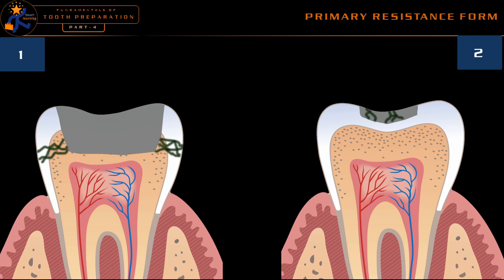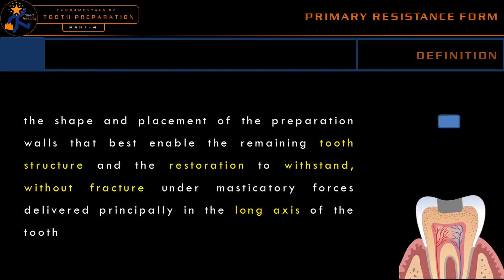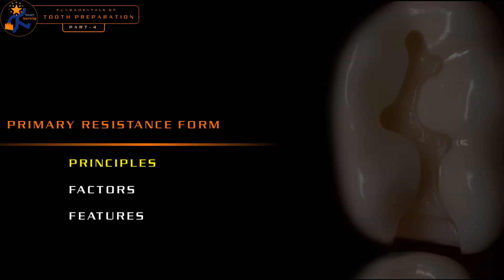In the second situation, the restoration is very thin and so it is very weak — the tooth was strong but the restoration started fracturing off, ending up with a restorative failure. So what primary resistance form actually means is: we should maintain the strength of the tooth, and at the same time provide enough bulk for the restorative material so that neither the restoration nor the tooth will fracture. Primary resistance form is defined as the shape and placement of preparation walls that best enable the remaining tooth structure and the restoration to withstand fracture under masticatory forces delivered principally in the long axis of the tooth.